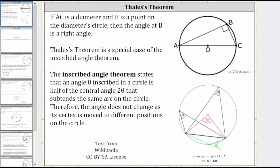Welcome to a lesson on Thales' Theorem. Thales' Theorem states: if segment AC is a diameter and B is a point on the circle, then the angle at B is a right angle.